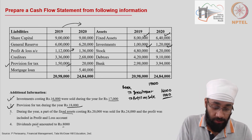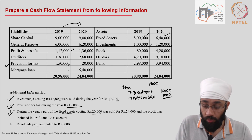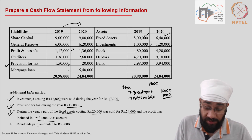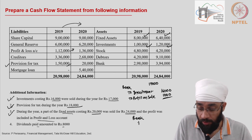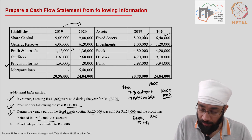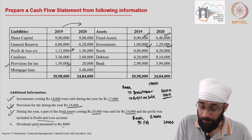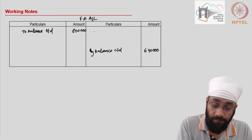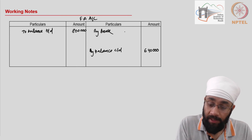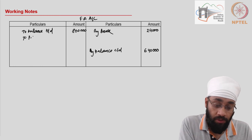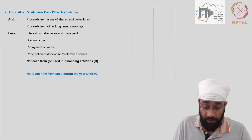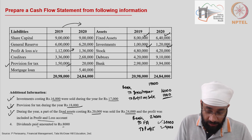The next adjustment says that during the year, part of fixed asset costing 20,000 was sold for 24,000 and the profit was included in the profit and loss account. So there is a sale of fixed asset during the year. The journal entry is bank debit to fixed asset — you get 24,000. The value of the asset was 20,000, therefore there is a profit on sale. So in the fixed asset account I am going to write: by bank 24,000, and profit on sale of 4,000 on the opposite side. That is done as well.